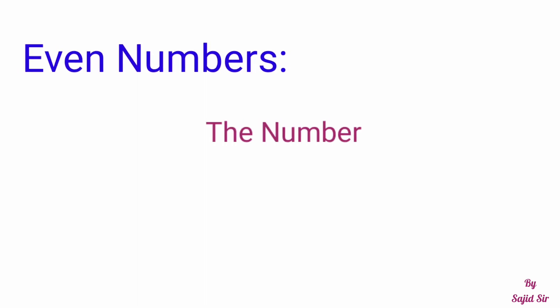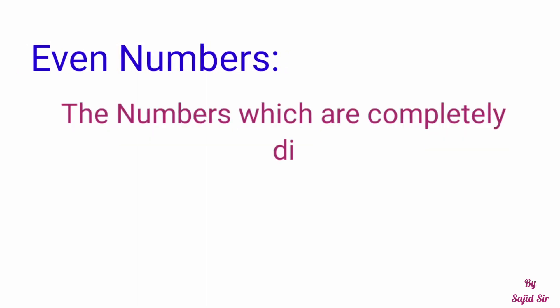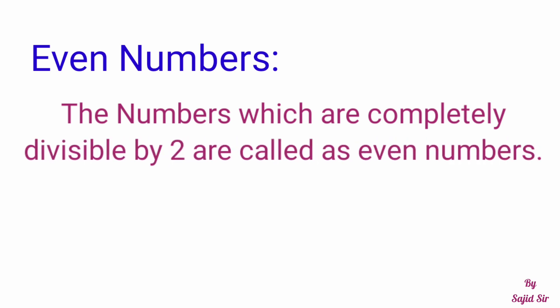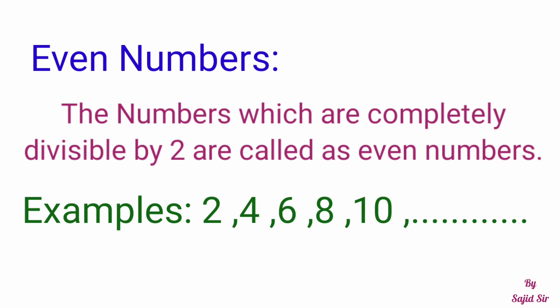Even Numbers: The numbers which are completely divisible by 2 are called Even Numbers. ऐसे Numbers जो 2 से completely divide हो जाते हैं या 2 के टेबल में आने वाले Numbers को हम Even Numbers कहते हैं। For example, 2, 4, 6, 8, 10, etc. — ये सब Even Numbers हैं।